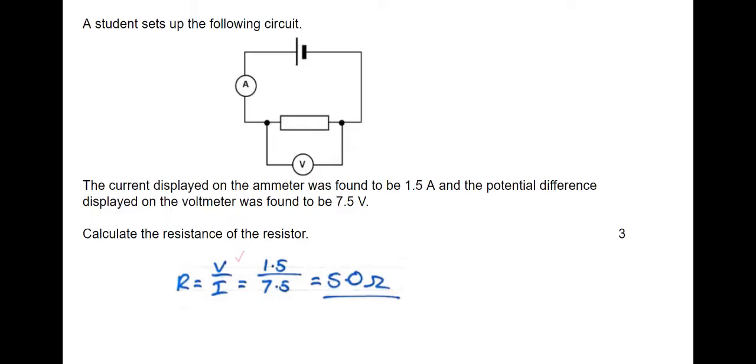Here we've got the right formula, but we've got the wrong working. We've inserted the numbers incorrectly into the formula. The answer is correct, but the rule is we stop marking where the mistake is. So here, the mistake is with the substitution. So even though we've got the right answer, we only get one mark, the formula mark only.